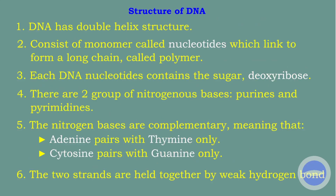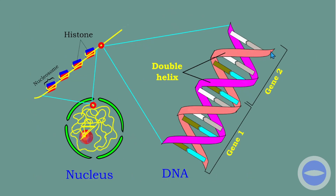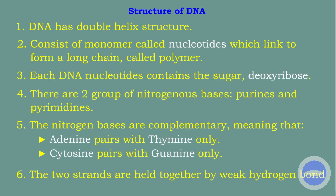Now we will talk about the structure of DNA. DNA has a double helix structure — two strands which are twisting around each other, like a spring. DNA consists of monomers called nucleotides which link together to form a long chain called a polymer.